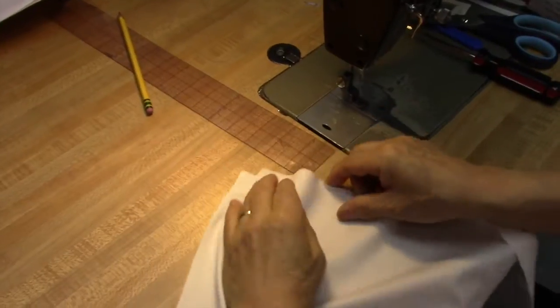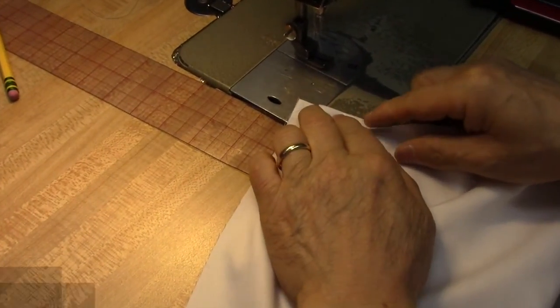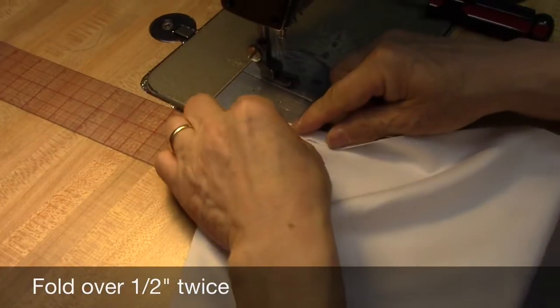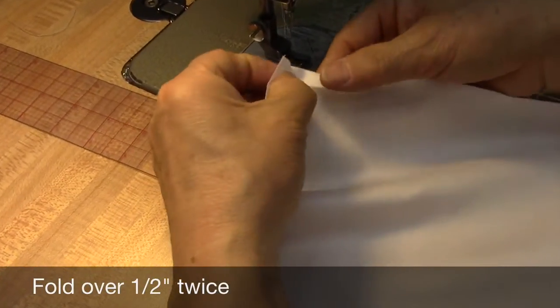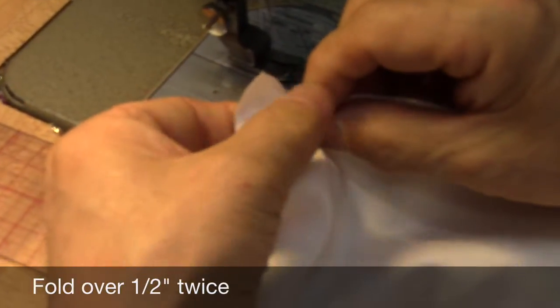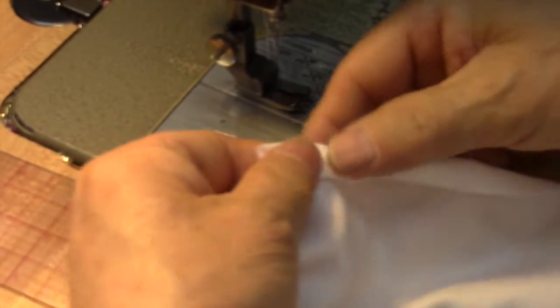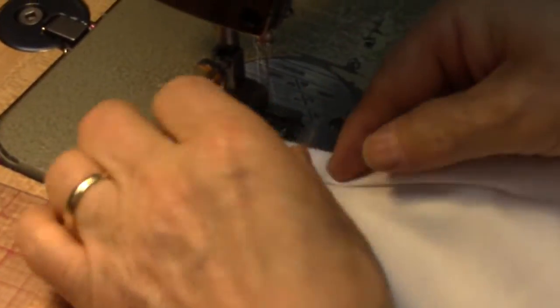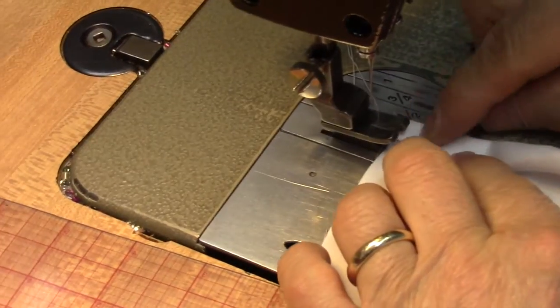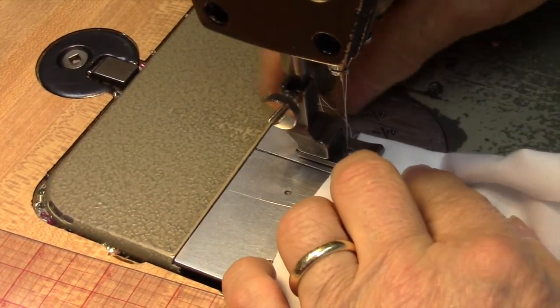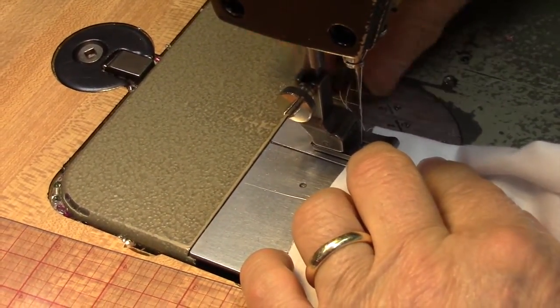I cut it half inch. You fold half inch, then you fold another half inch here. Then you stitch here, edge stitch the folding.